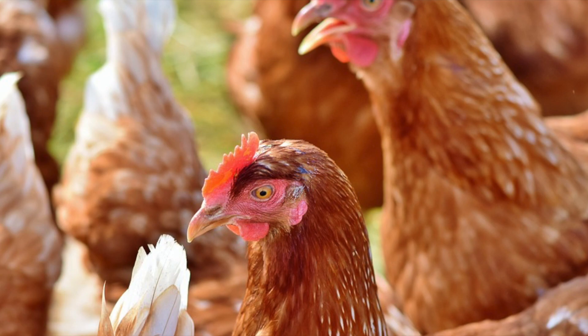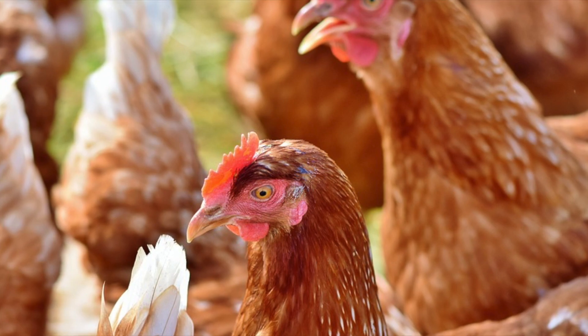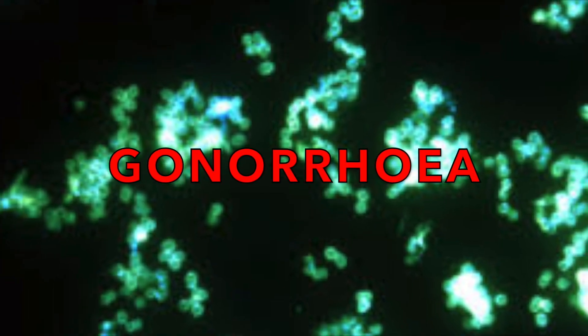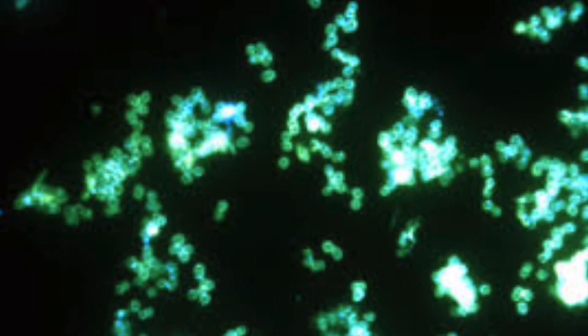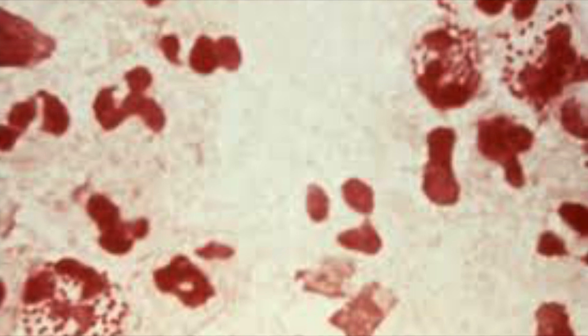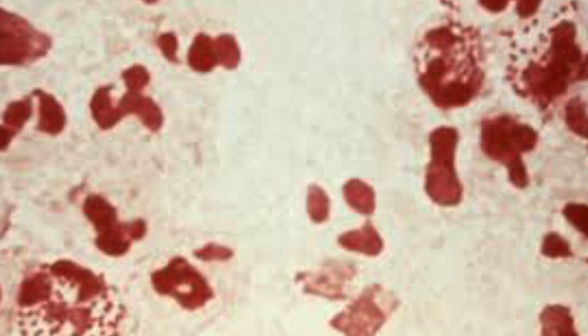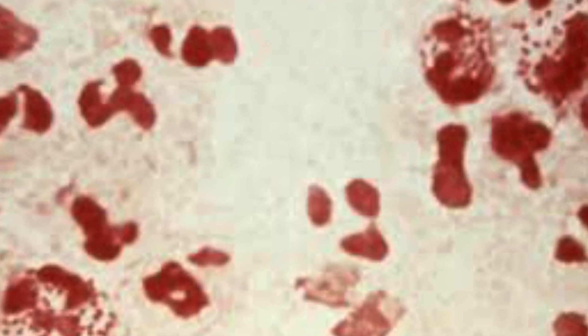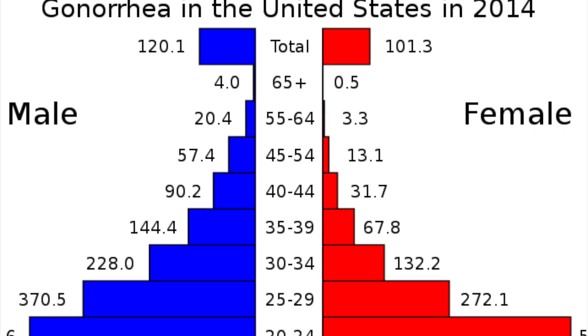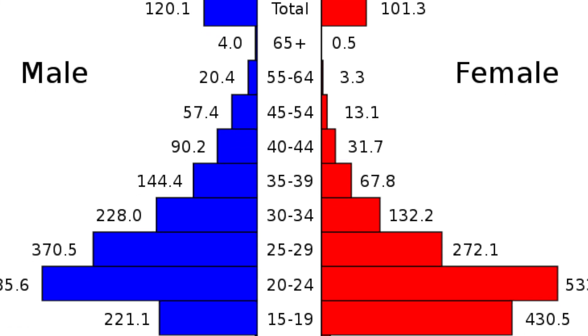The next bacterial disease is gonorrhea, which is an STI that can be caused by unprotected sexual contact with an infected person. Gonorrhea has symptoms in the early stages but then becomes relatively symptomless. Early symptoms include pain on urination. Untreated gonorrhea can cause long-term pelvic pain, infertility, and ectopic pregnancies.